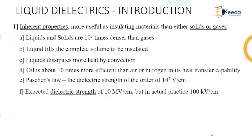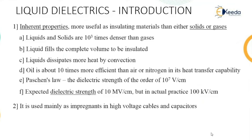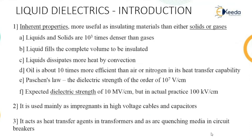Oil is almost 10 times more efficient than air and nitrogen in terms of heat transfer capability. According to Paschen's law, the dielectric strength is of the order of 10^7 volts per centimeter, and the dielectric strength in liquids is expected to be 10 megavolts per centimeter as per Paschen's law, but in practice we get around 100 kilovolts per centimeter. This liquid can be used in cables and capacitors as an impregnant, as a heat transfer element for transformers, and to quench the arc as a medium in circuit breakers.